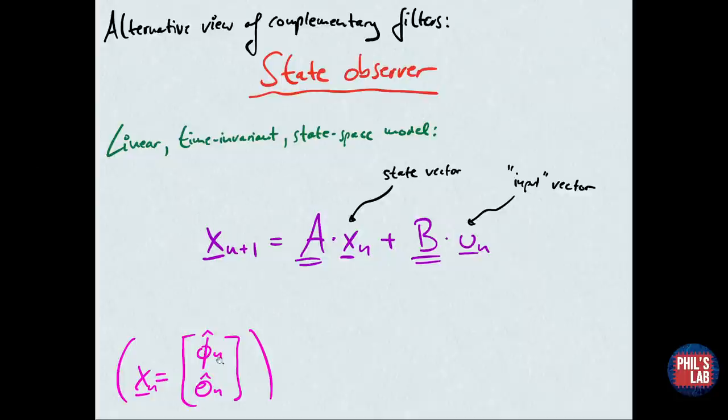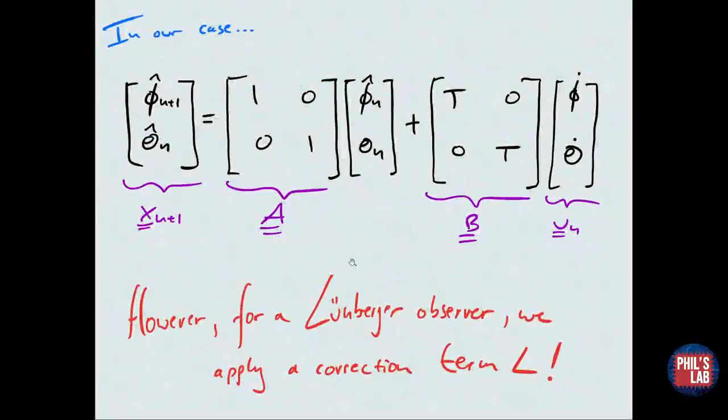Essentially, if we have a linear time-invariant state-based model such as this one here, our state vector is denoted by x, which contains theta and phi. That is a state transition matrix times our current state vector plus some control input matrix times an input vector. In our case, we can fill in all these matrices. We have our state vector, state transition matrix, input matrix, and our inputs—our phi dot and theta dot, which are the transformed body to Euler rates from the gyroscope.